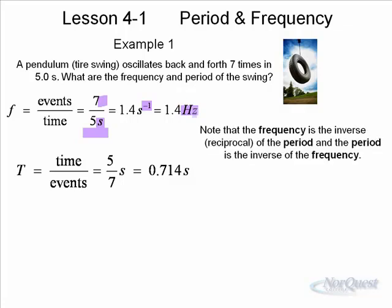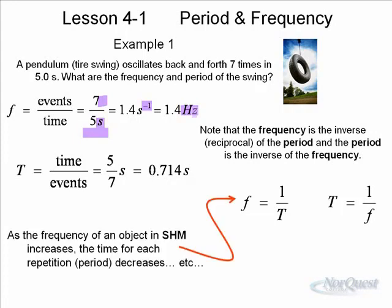So that is the period of this particular oscillator. So the frequency is 1.4 Hertz. The period is 0.714. And notice that they are the inverse or reciprocal of each other. So we often say that frequency is equal to 1 over T, T is equal to 1 over f.